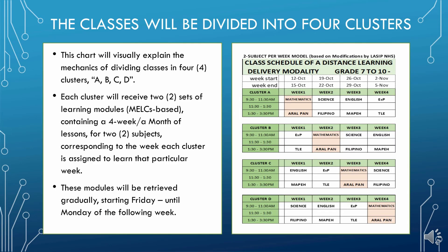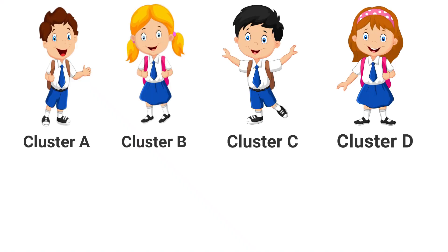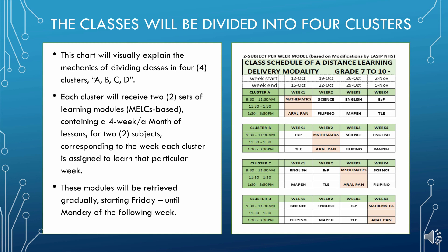Classes will be divided into 4 clusters. This chart will visually explain the mechanics of dividing classes into 4 clusters — A, B, C, and D. Each cluster will receive 2 sets of learning modules which are MEX-based, containing 4 weeks or a month of lessons for 2 subjects corresponding to the week each cluster is assigned. These modules will be retrieved gradually starting Friday until Monday of the following week.